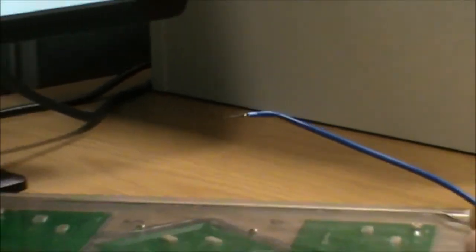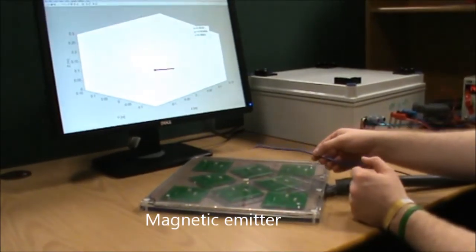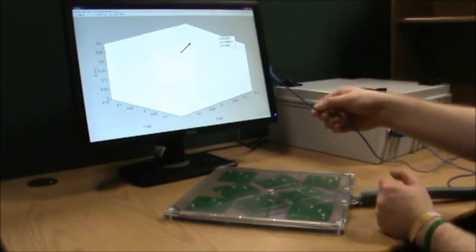Our electromagnetic tracking system tracks position and orientation of a commercial sensor in the three-dimensional volume above an array of planar magnetic coils.